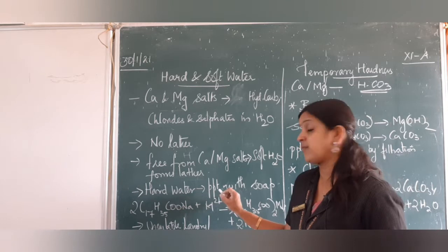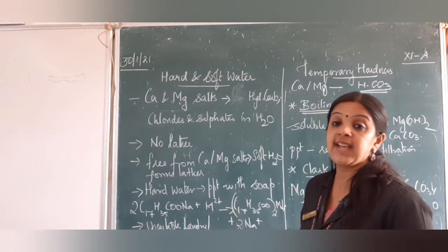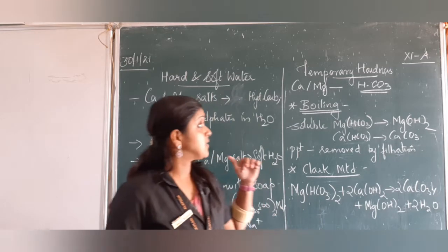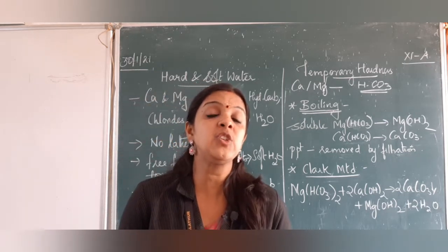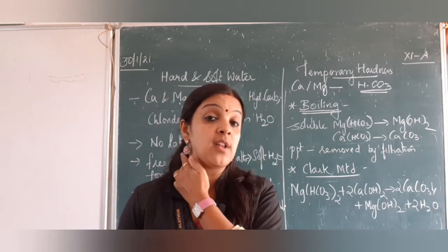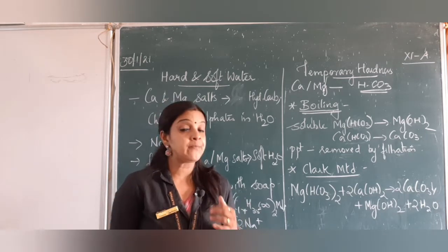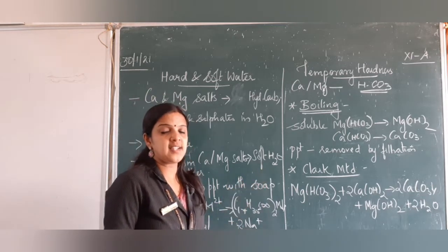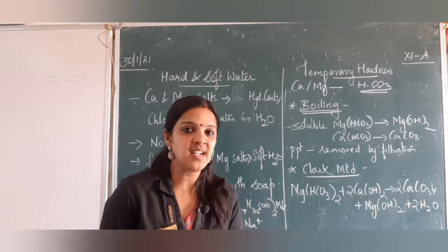Hard water forms a precipitate when it reacts with soap — sodium stearate reacts with the metal ions to form a precipitate which can be filtered off. Such hardness is called temporary hardness. Hard water cannot be used for laundry purposes and also in boilers because they deposit their salts in the boiler or on the cloth, which can damage the product. There are two types of hardness: temporary hardness and permanent hardness.